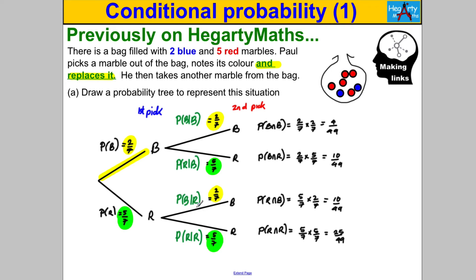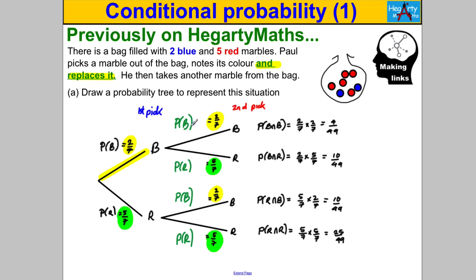I was a bit cheeky when I first presented this — I just wrote the probability of getting a blue or red without saying 'given I've already got a blue' or 'given I've got a red.' The reason is these events were independent because he replaced the marbles. The probability of a blue given red was just the probability of blue, as we discussed for independent events. But now we're going to deal with cases where events are not necessarily independent.